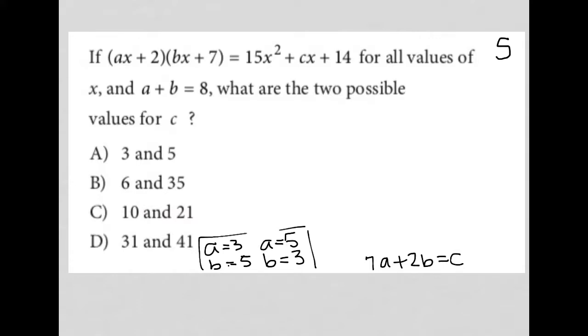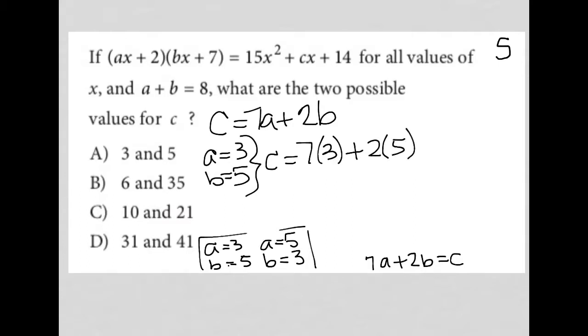So what am I trying to find? What are the two possible values for c? Well, if c is equal to 7a plus 2b, and a could be equal to 3 and b equal to 5, so under that scenario, I would have c is equal to 7 times 3 plus 2 times 5. 7 times 3 is 21. 2 times 5 is 10. So 21 plus 10 would be 31. So I get 31.